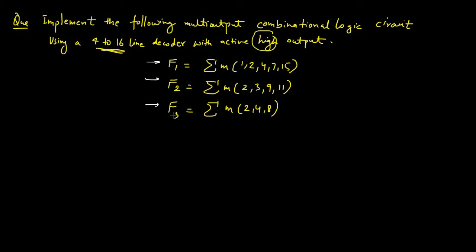Since the decoder outputs are active-high, an OR gate is required for every output of the combinational circuit. We draw a 4-to-16 line decoder with four inputs A, B, C, D where A is the MSB and D is the LSB, and the enable is connected to logic 0.